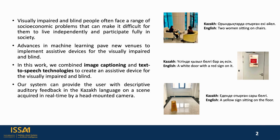Challenges faced by visually impaired and blind people in everyday life are significant. In our work, by harnessing modern AI including image captioning and text-to-speech technologies, we develop an assistive device aiming to help visually impaired people interact with the environment. The resultant assistive device offers auditory feedback in the Kazakh language on a scene acquired in real-time by a head-mounted camera.